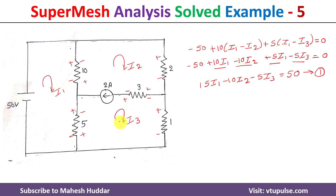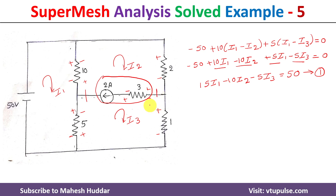Next we will find the equations for the second and third loops. But if you observe carefully, we are getting the super mesh concept here, because a 2-ampere current source is flowing between I2 and I3. Whenever we get the super mesh concept, we just remove that branch. When you remove this branch, we need to rewrite the circuit.